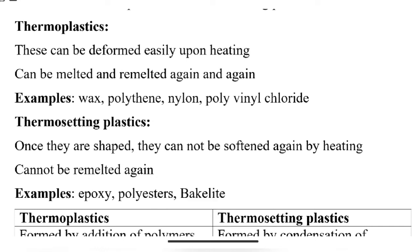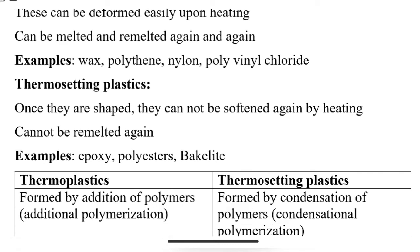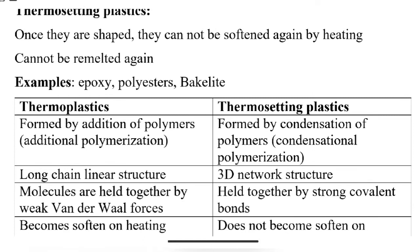Thermosetting plastics are the opposite — once they have taken a shape, they cannot be softened, reshaped, or remelted again. Examples include epoxy — you will see many videos today of table epoxy, key rings, necklaces, and pendants made with epoxy and different dyes. But once hardened, epoxy cannot be reshaped or remelted. Other examples are polyester and Bakelite.